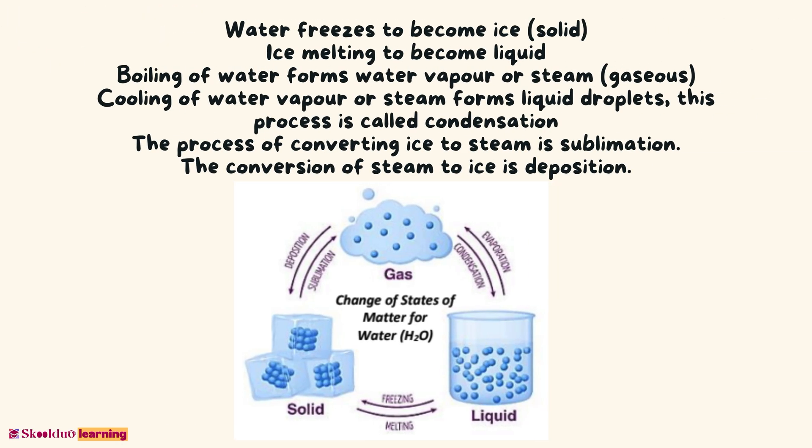Water freezes to become ice. Ice melts to become liquid. Boiling of water forms water vapor or steam. Cooling of water vapor or steam forms liquid droplets — this process is called condensation. The process of converting ice directly to steam is called sublimation.